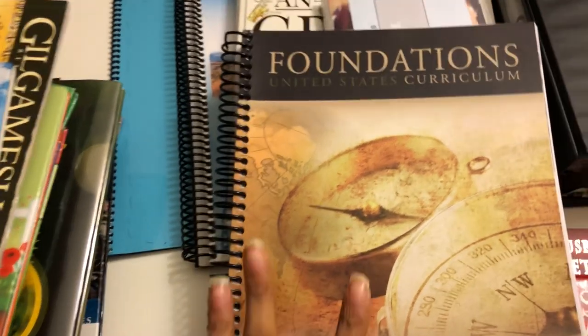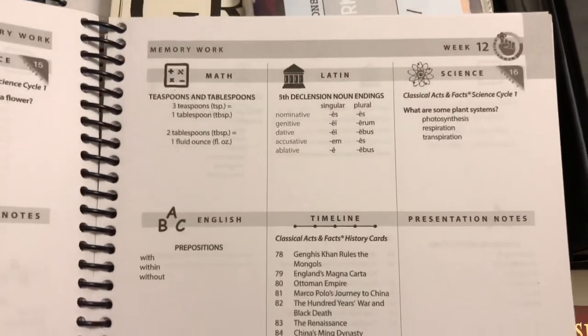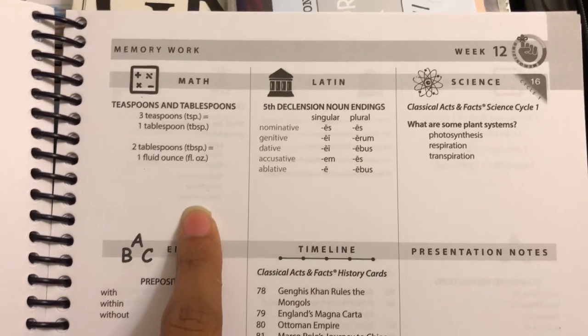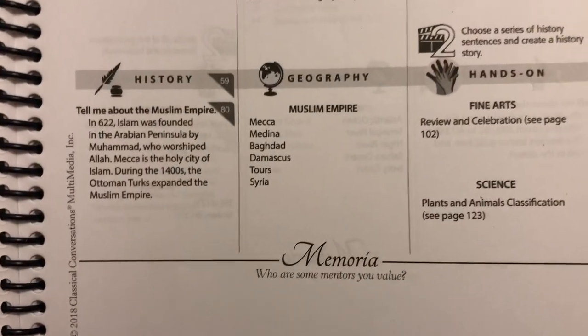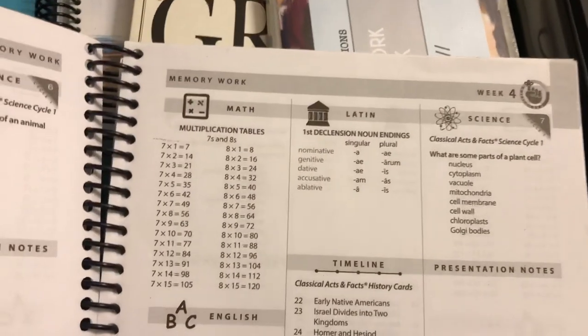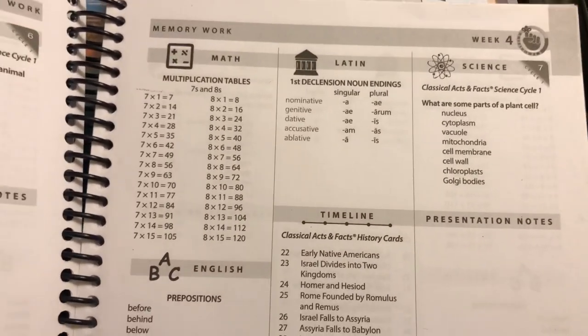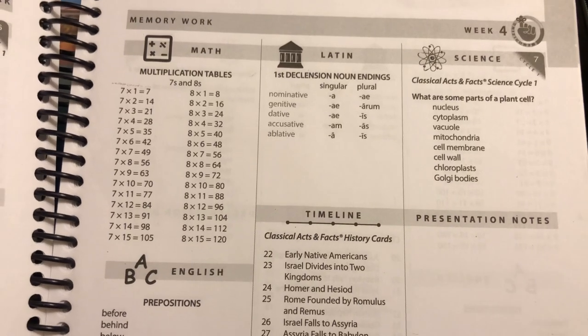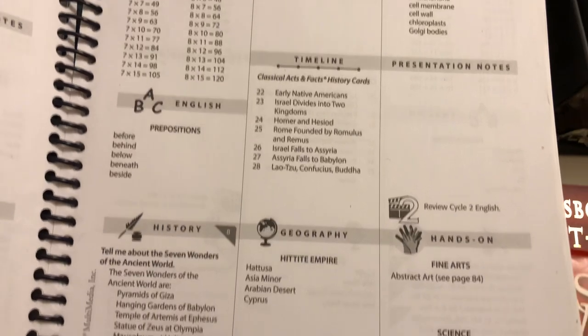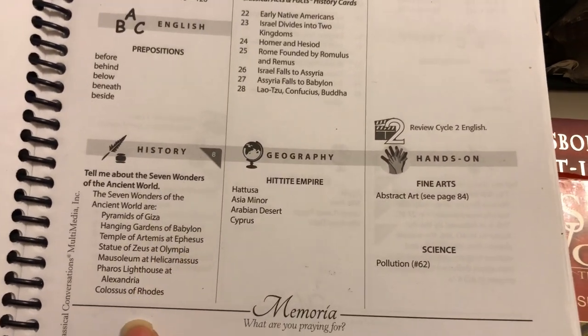You already know we use the foundations guide. If you're new, catch up on those videos when you get a chance. This is cycle one so we haven't gotten this far yet — let's go back to week four. We have our multiplication here, and what are some parts of a plant sale? They were actually talking about plant sales, then pyramids, then the Hittite Empire. I use that as my basis.